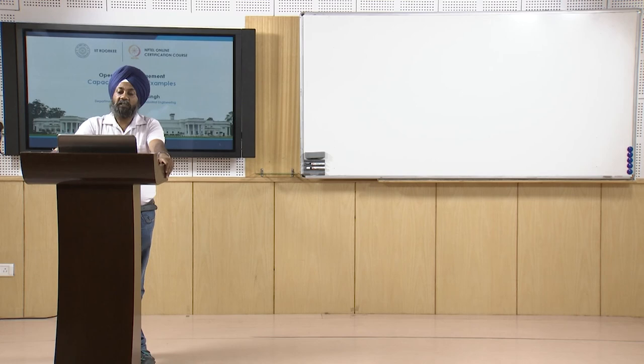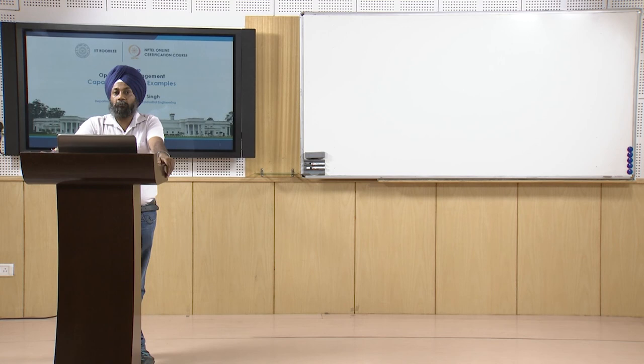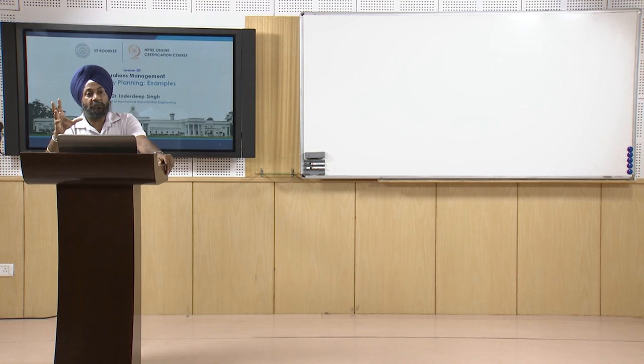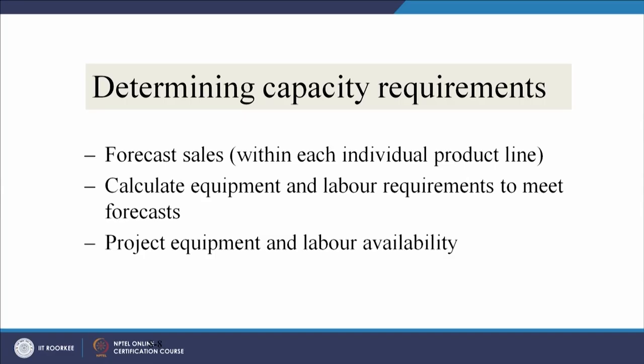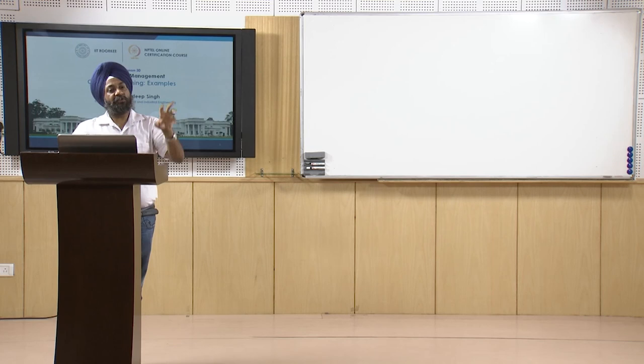Determining capacity requirements will help us plan production more efficiently. A forecast of sales is required for each individual product line. For a multi-brand, multi-product company making five different products, we must have a forecast for each. Then we calculate equipment and labor requirements to meet the forecast - as per the functions of production planning and control involving routing and estimating.